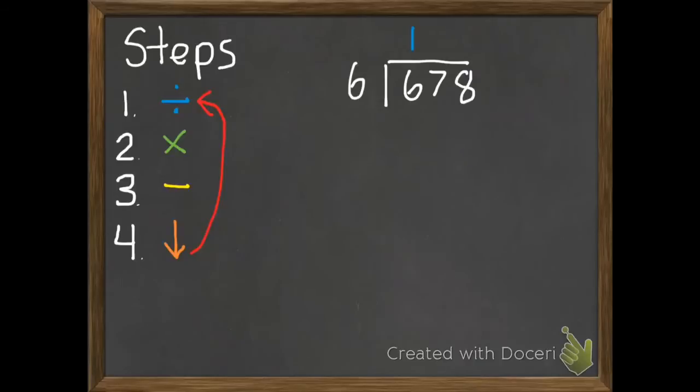Second step is to multiply. So we just put up our 1. So 1 times 6, which is 6. Third step, subtract. So we're going to subtract 6 subtract 6, which is 0. Fourth step is to bring down. We only bring down one number at a time. So we're going to bring down our tens, which we have 7 tens.